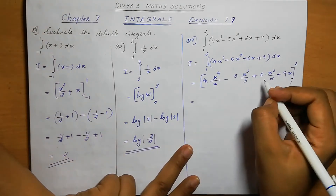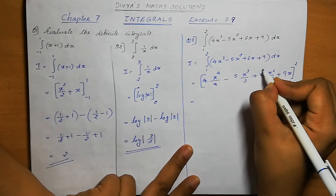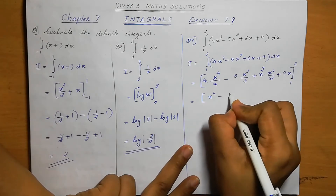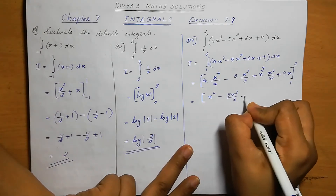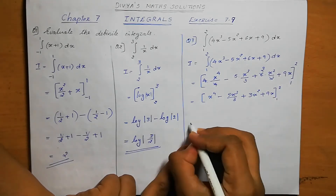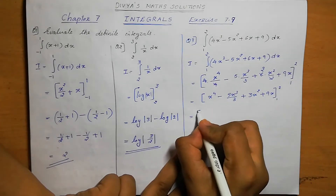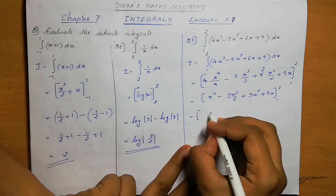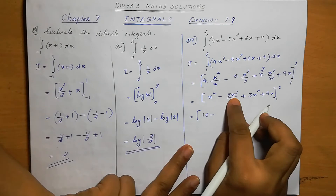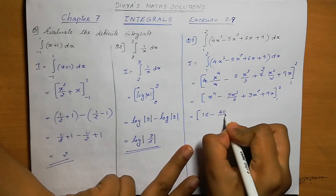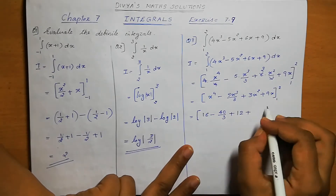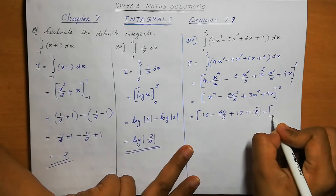Simplifying: 4 and 4 cancel, and 6 and 2 cancel. So we get x power 4 minus 5x cube by 3 plus 3x square plus 9x, within the limit 1 to 2. Applying upper limit 2: 2 power 4 is 16, minus 5 into 2 cube which is 8, so 40 by 3. Plus 2 square is 4, 4 into 3 is 12. Plus 9 into 2 is 18.